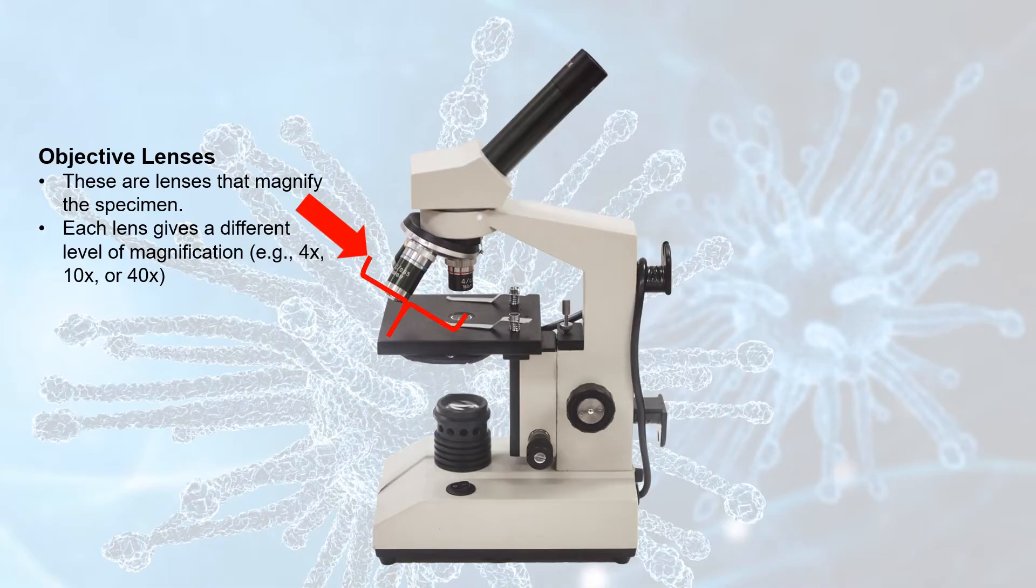The lowest power objective lens, which is also the shortest one, magnifies by four times. The medium power objective lens, which is a bit longer, magnifies by ten times. And the highest power objective lens, which is also the longest, magnifies the specimen by forty times.